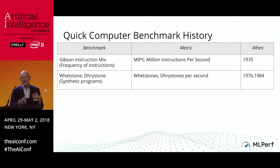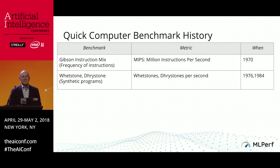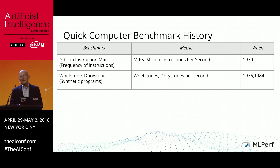That didn't work all that well because it mattered which program you were running, not just the average instructions. The next iteration to try and improve benchmarking was to make synthetic programs that were supposed to be typical of the workload, called Whetstones and Drystones. One problem there was that, because it wasn't a real program, if you turned on an optimizing compiler, it would throw most of that code away. So the solution was you're not allowed to use an optimizing compiler — and that's not such a great idea, because in computer architecture, compilers play a vital role.